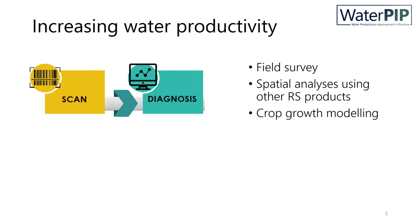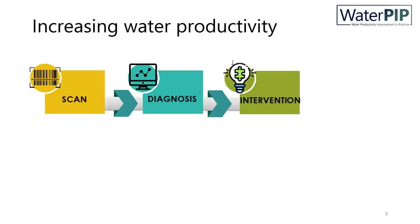For detailed field assessments, crop growth modeling can be a good tool to not only get a good idea of the stress factors, but also to assess the impact of interventions. However, setting up a crop growth model requires a lot of field-based information and can only be set up one field at a time. The final step is to link the understanding of the limiting factors to identify interventions that can address the diagnosed causes.